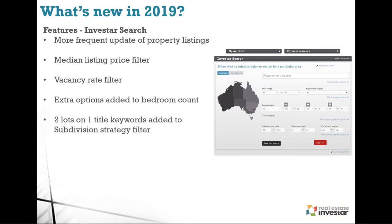Two lots on one title keywords have been added to the subdivision strategy filter. For those looking at splitter blocks or widow blocks — where it's just a boundary realignment, a less intensive subdivision — we've added all the keywords that agents use indicating a property is two lots on one title. We've also added daily email alerts for new listings only: set listing age to one day maximum, and you'll only get an email if new listings meet your criteria, saving your inbox from unnecessary alerts.